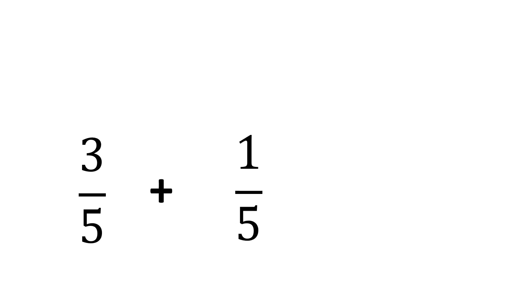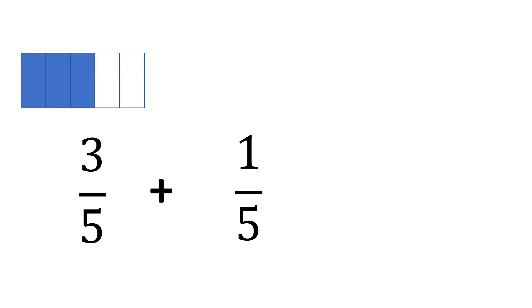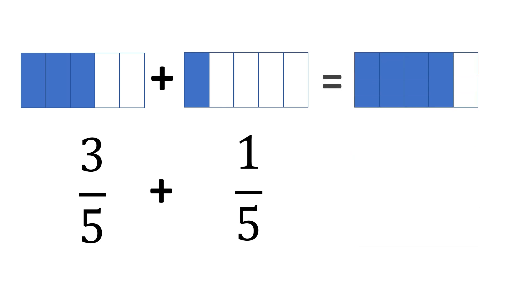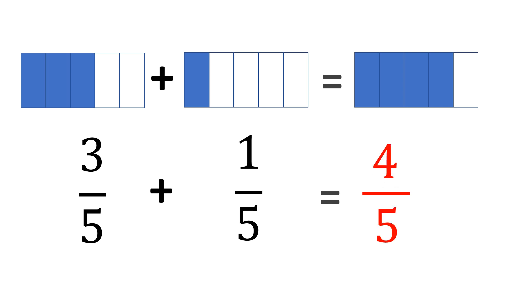Another example: 3 fifths plus 1 fifth. Let us visualize this through figures to understand the concept of combining these two. We have 3 shaded parts out of 5, plus 1 shaded part out of 5. Combining them gives 4 shaded parts out of 5, or 4 fifths. The expected answer is 4 fifths. We copy the common denominator and add the numerators: 3 plus 1 is 4, so the answer is 4 fifths.